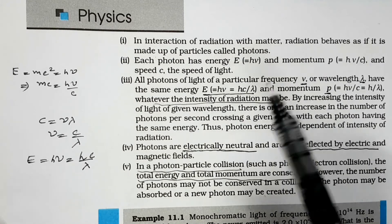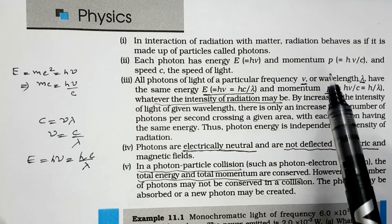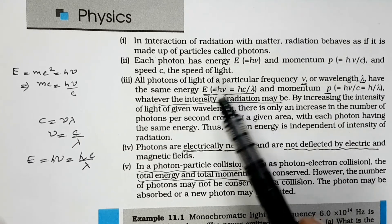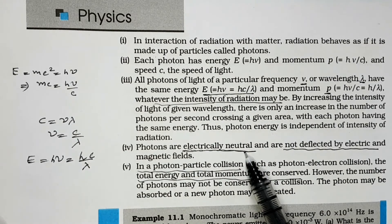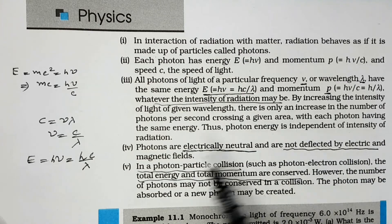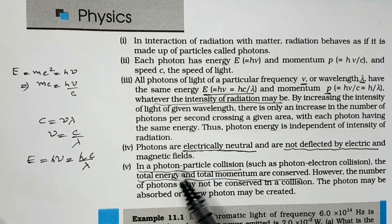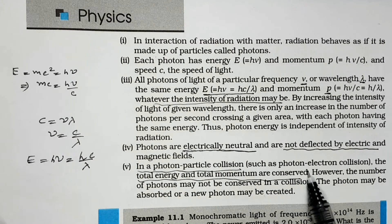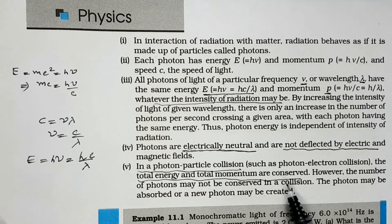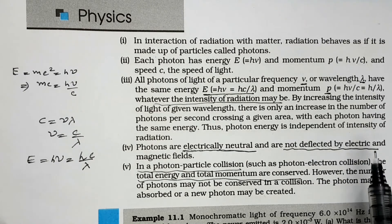Whatever may be the intensity, the energy per photon is fixed by frequency alone. Photons are electrically neutral and are not deflected by electric and magnetic fields. In photon-particle collisions, the total energy and total momentum are conserved — the law of conservation of energy and linear momentum hold. However, the number of photons may not be conserved; photons can be absorbed, created, or extra photons emitted.